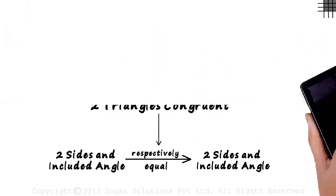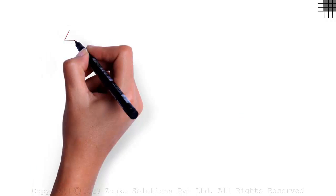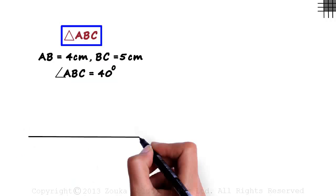Let's move to a new page to understand this. Say we have to draw a triangle ABC with the following information provided to us. We have AB equal to 4 centimeters, BC equal to 5 centimeters, and angle ABC equal to 40 degrees. So triangle ABC will shape up this way.